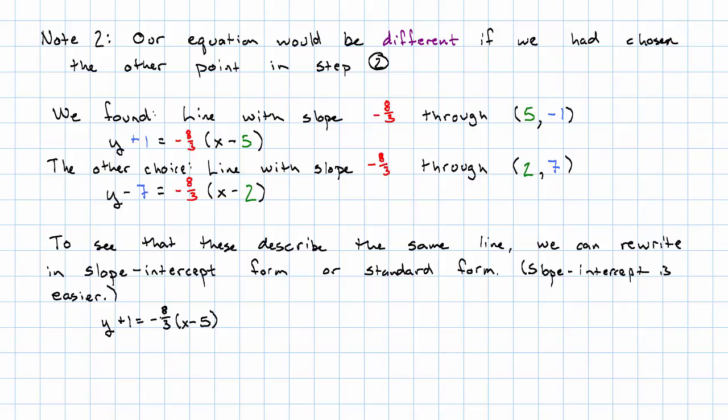With the first version, first we distribute. 8 thirds times 5, I'm just going to write 40 thirds. And then we subtract 1 from both sides. And we get y is negative 8 thirds x plus 37 thirds. You're welcome to use your calculator for that arithmetic if you'd like.